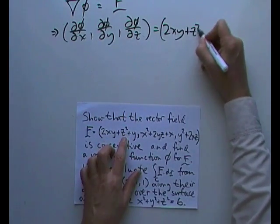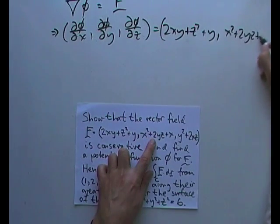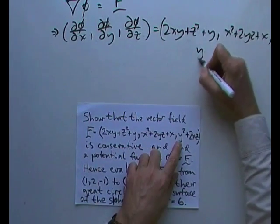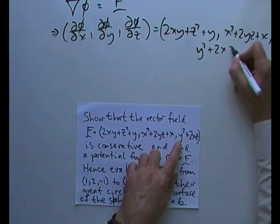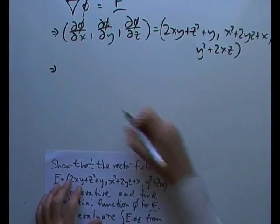2xy plus z squared plus y, x squared plus 2yz plus x, and it's going underneath, y squared plus 2xz. So from that, you get three equations.